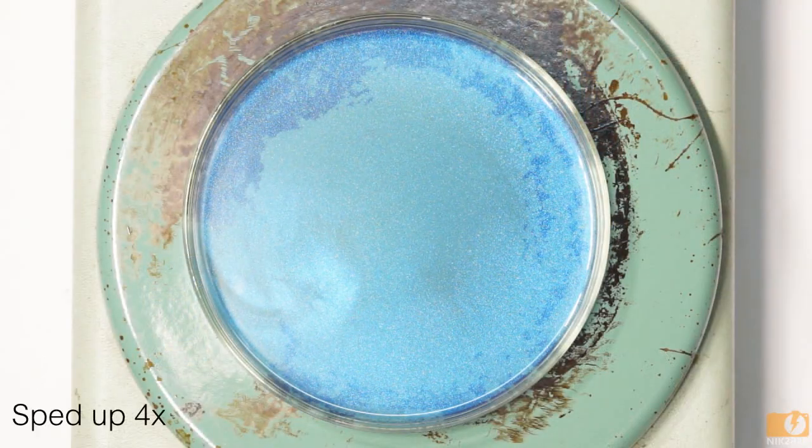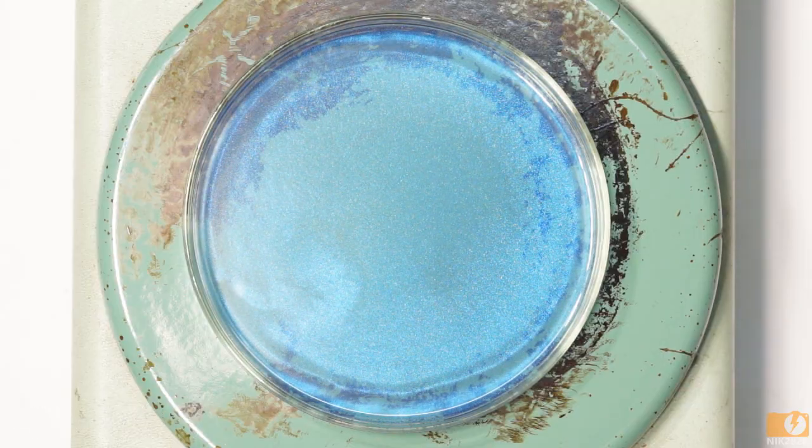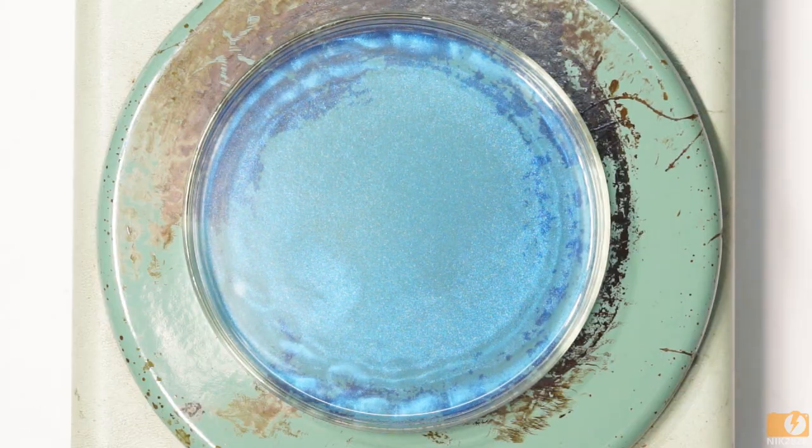As the oil heats, we can see a pattern forming in the mica powder. This pattern is bennard cells, caused by Rayleigh-Bennard convection.